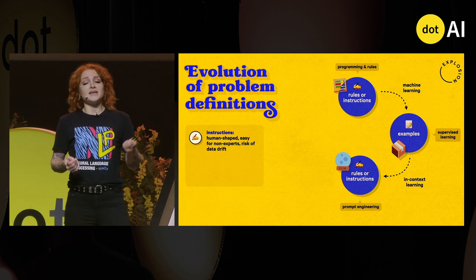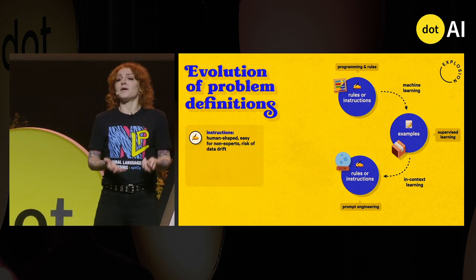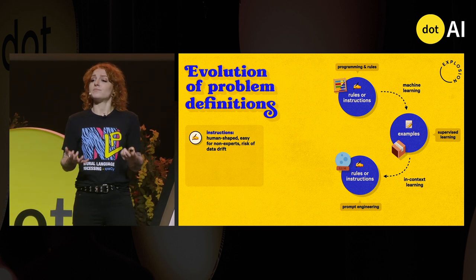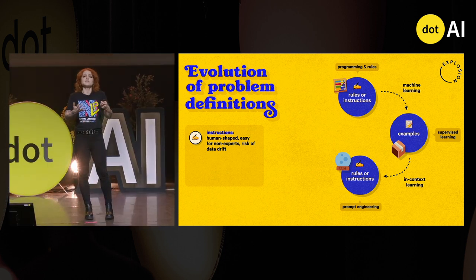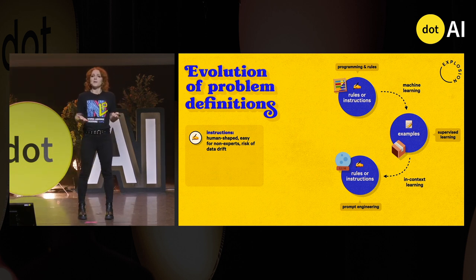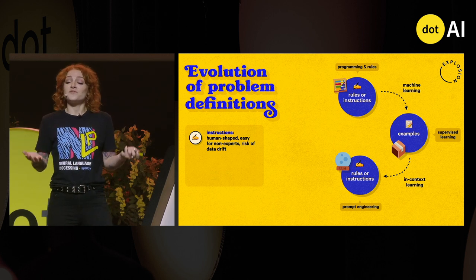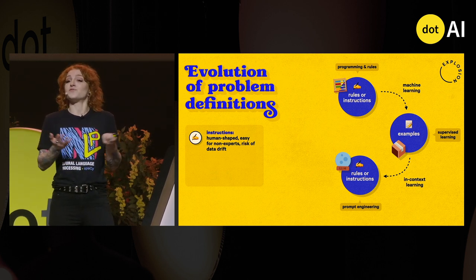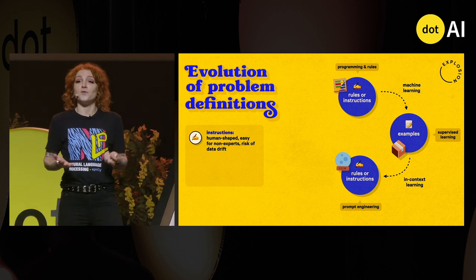And there are pros and cons here. Instructions are inherently human-shaped, so they make it very easy for non-experts to get started, because you can tell a computer what to do the way you would tell a human what to do. But if the data changes or the model changes, we have a risk of data drift and then our rules won't apply anymore.